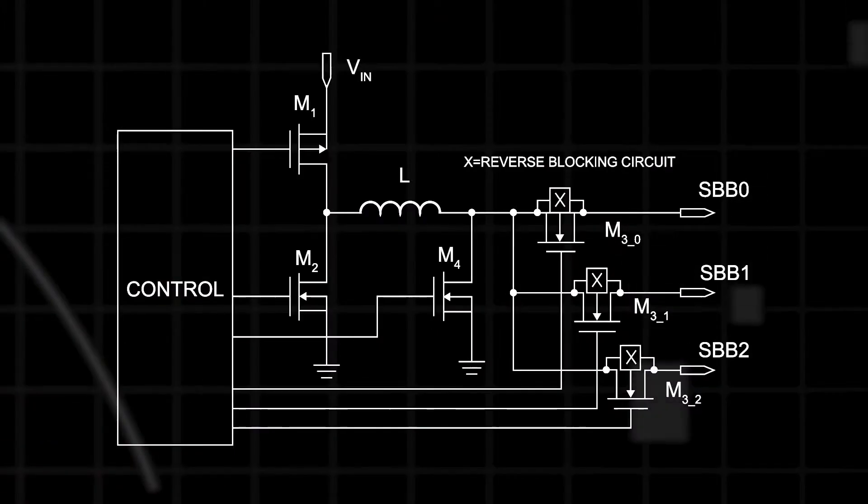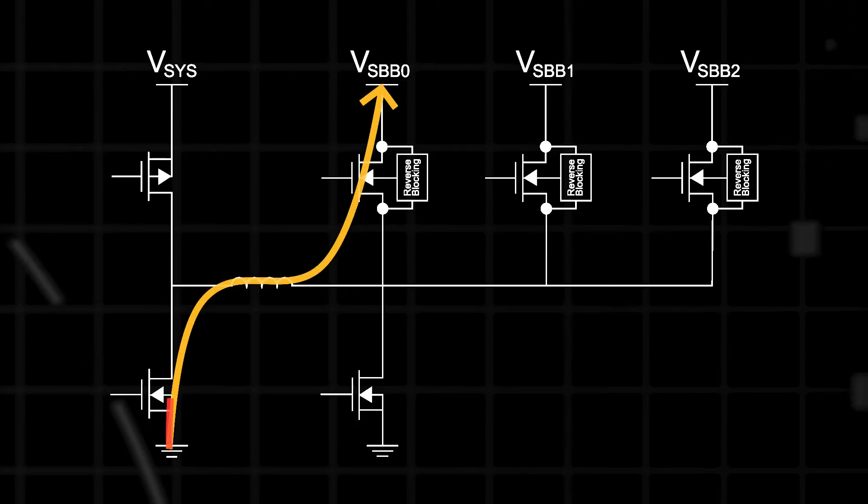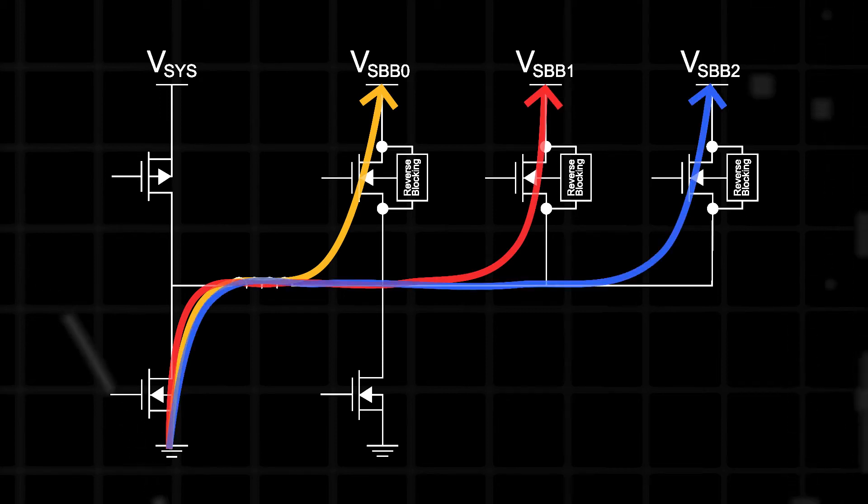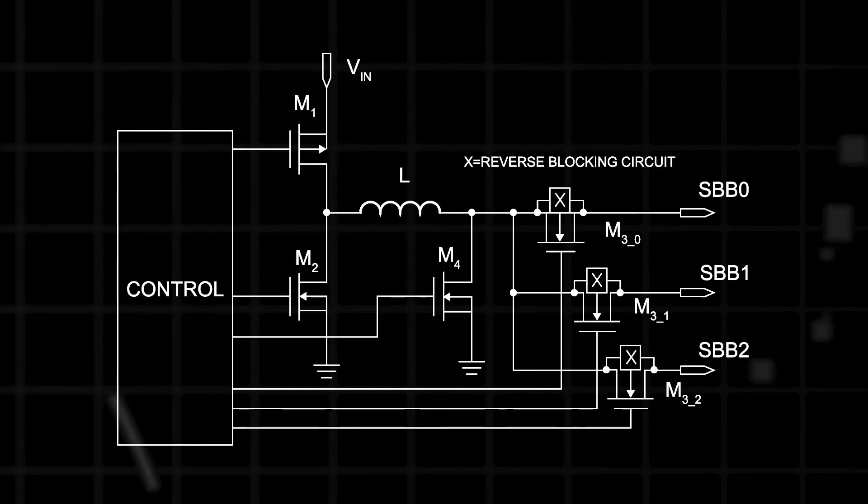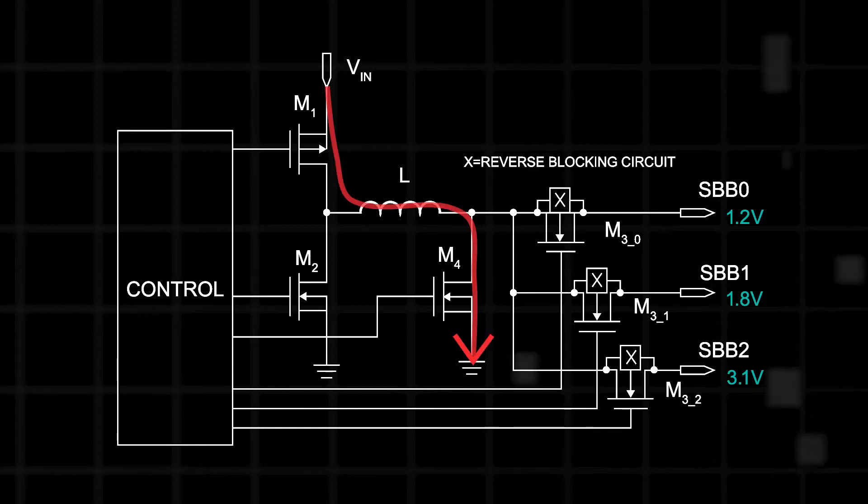In a SIMO architecture, the inductor is shared between multiple switching regulators, with a specialized controller that manages the current flow to each rail. This architecture allows each voltage rail to be individually programmed, providing designers the greatest degree of flexibility.